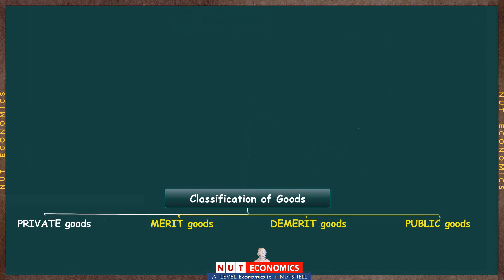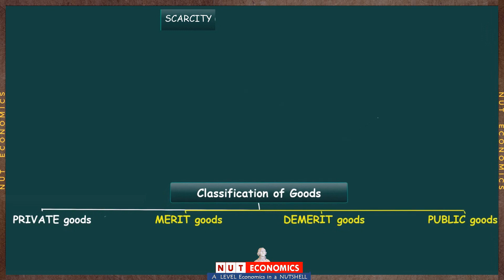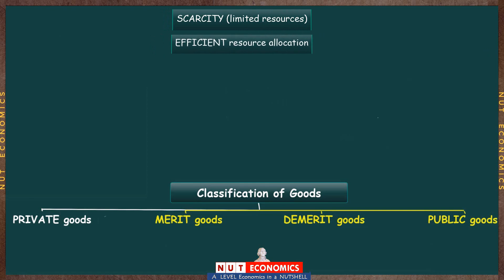We started off with the issue of scarcity, where we said that the society needs to allocate its limited resources wisely because it cannot make everything that it wants. So this allocation of resources — how much of these resources should be used to produce each of the different products — one way of achieving the best allocation is the free market economic system.